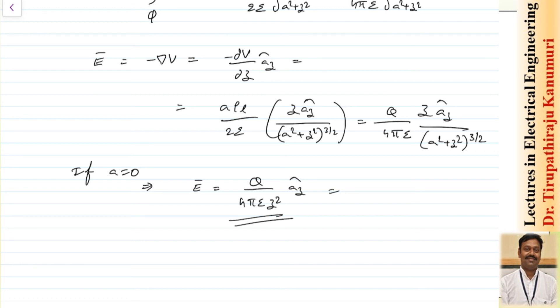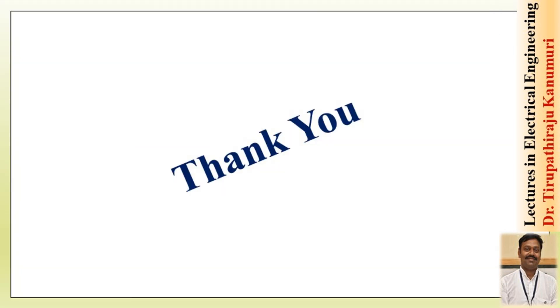I have solved one more numerical in the handwritten material provided in the description below — you can download it from there. There is one more example on the field on the axis of a circular disk of charge; please try to solve it so this concept becomes completely clear. I hope the concept of potential gradient and how to calculate electric field intensity from the potential gradient is clear to you. If you still have any queries, you can leave your comments in the comment section below and I will answer them. Thank you very much.